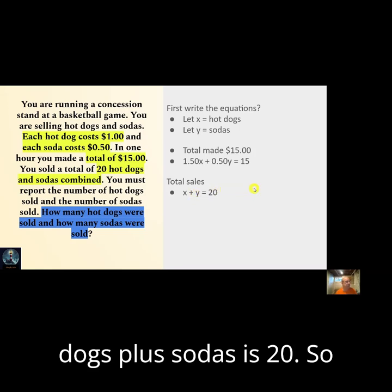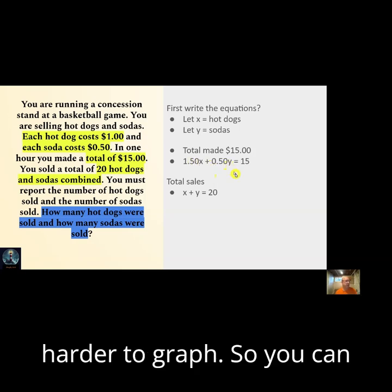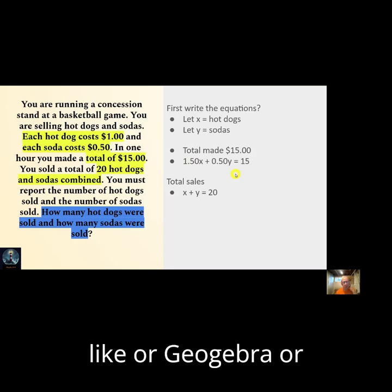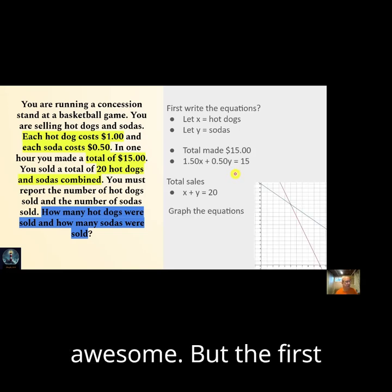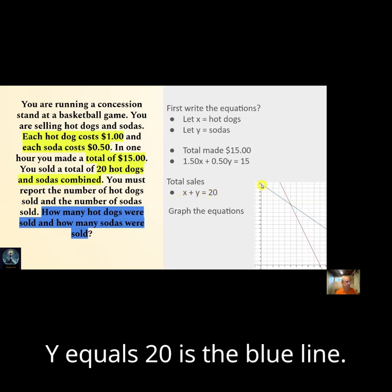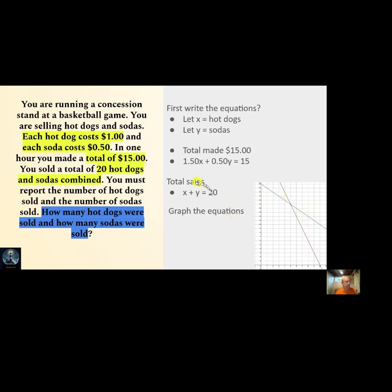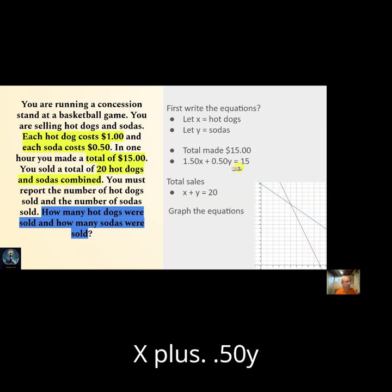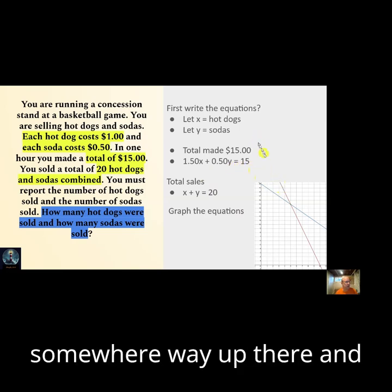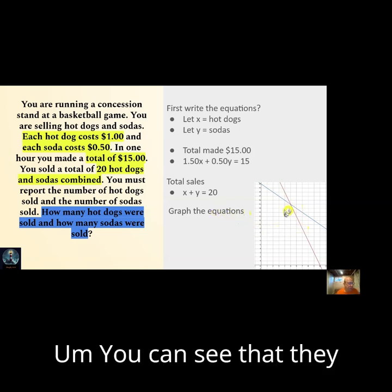So let's graph these two equations. These are a little harder to graph, so you can put it into decimals if you like, or GeoGebra, or if you can solve it and then graph it, that would be awesome. But the first equation x plus y equals 20 is the blue line, so it starts at 20 and goes down. And then the red line is 1.50x plus 0.50y equals 15, and that starts somewhere way up there and goes down this way. You can see that they cross right here, so that's (5, 15) right there.